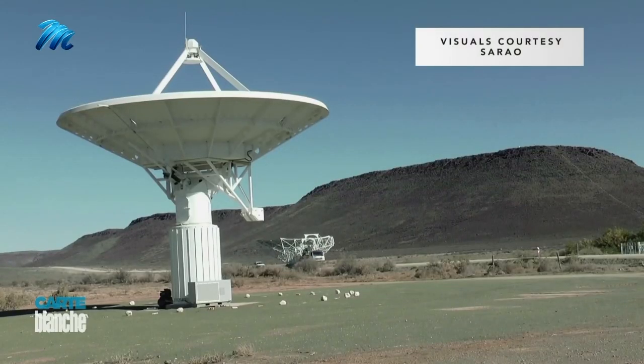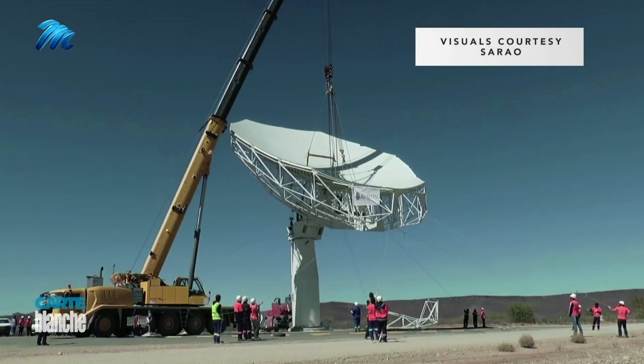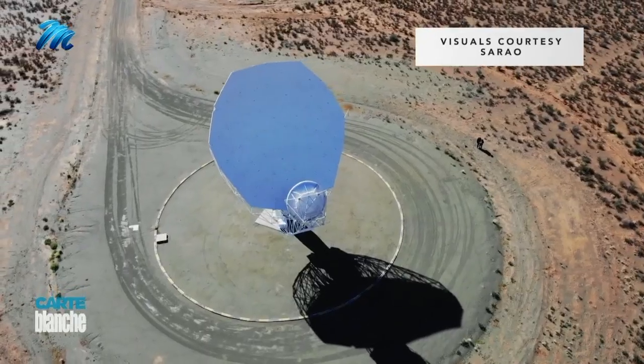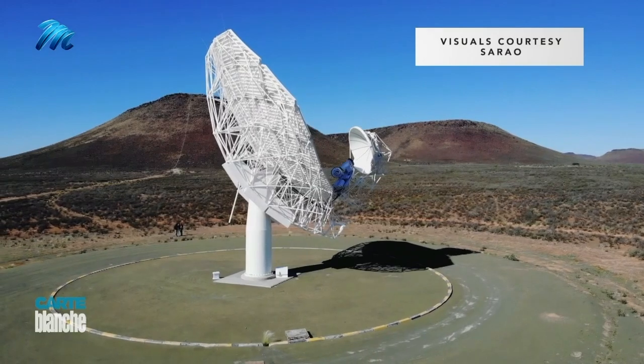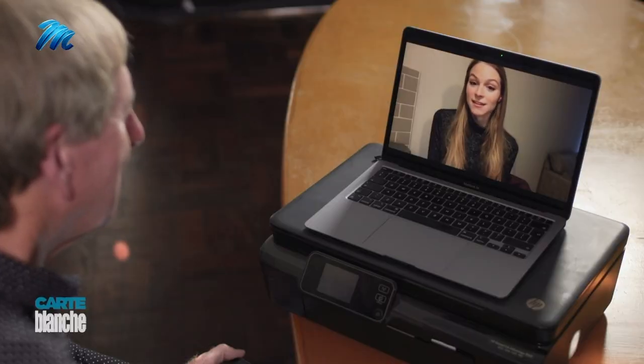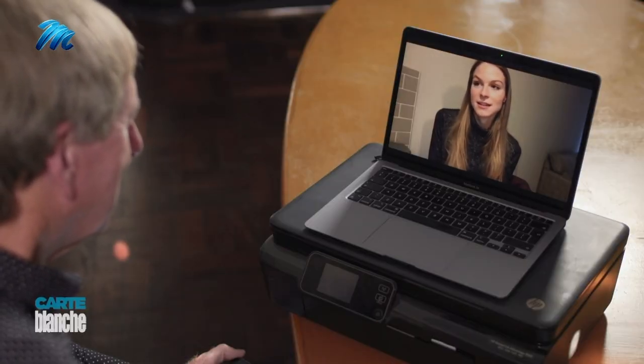The SKA will only become operational in 2030, but a tantalizing glimpse of its potential can be seen with Meerkat. One of the first scientists able to access its power was the University of Virginia's Alison Matthews. Since we were part of commissioning the telescope, we got access to some of the observations taken to test out the telescope's capabilities.